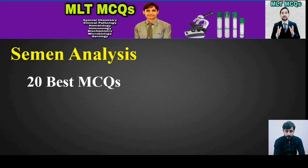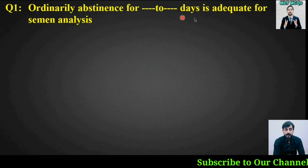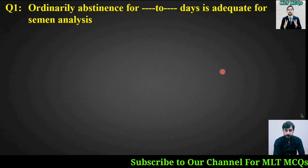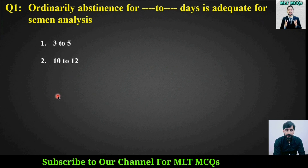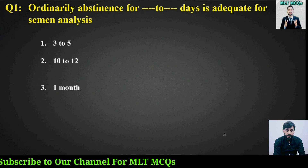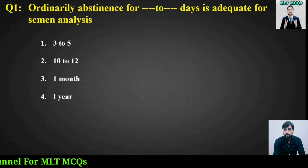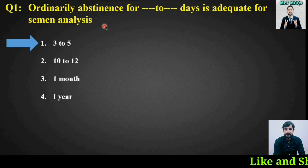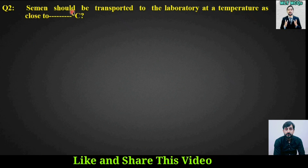MCQ number one: Ordinarily, abstinence for how many days is adequate for semen analysis? Options are: three to five days, ten to twelve days, one month, or one year. The right answer is option number one — three to five days abstinence is enough for semen analysis.